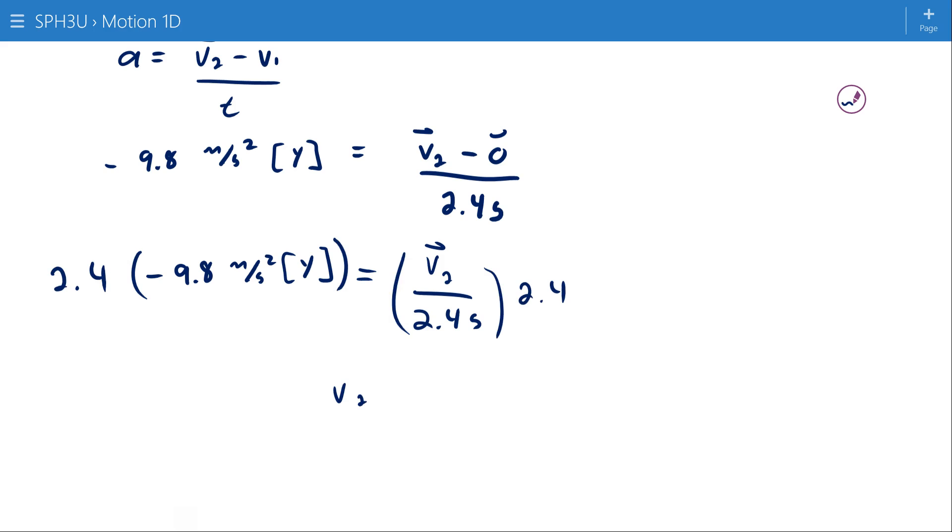And v2 is going to work out to be negative 23.52 meters per second up. Negative up really means 23.52 meters per second down, if you prefer.